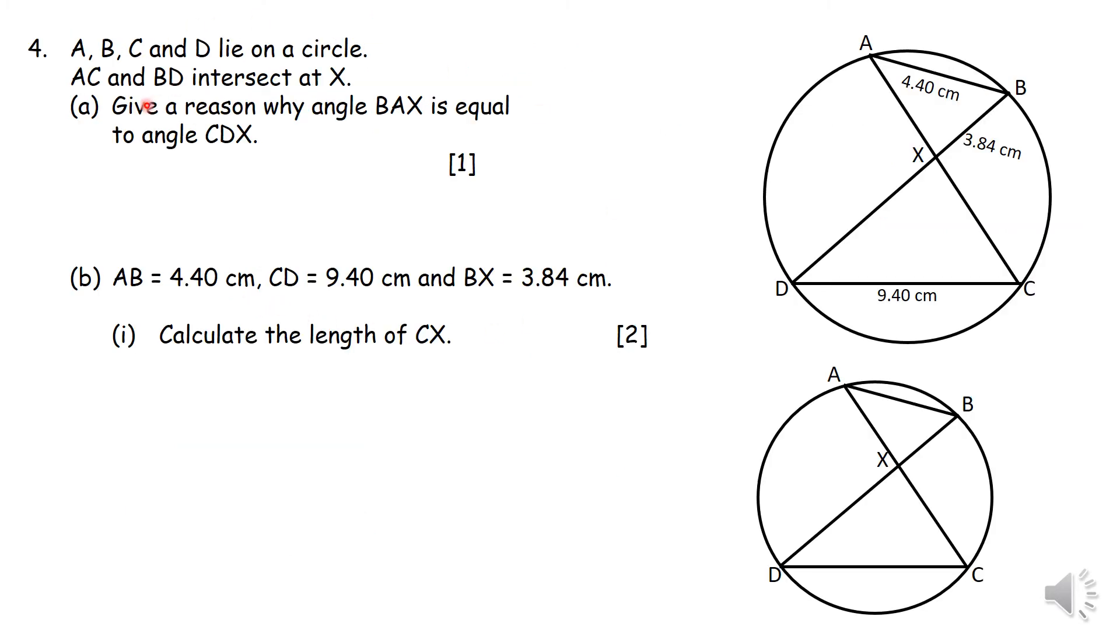Right, you have got another diagram here. You have got A, B, C, and D lying on the circle. AB, C, and BC, AC all the way, and BC intersect. AC and BD intersect at X. Then give a reason why angle BAX and angle CDX will be equal.